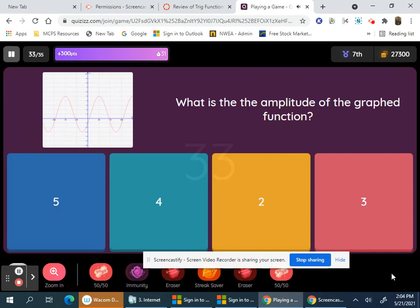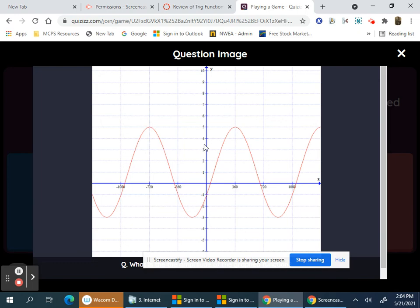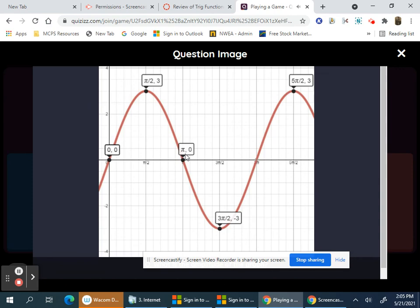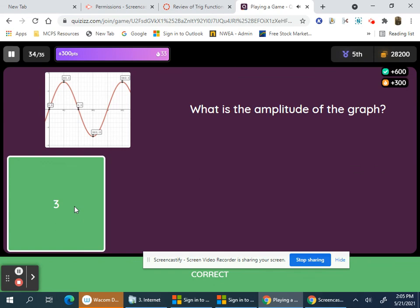What's the amplitude of the graph function? From negative 3 to 5 is 8. Or you find the average of 5 plus negative 3 is 2, divided by 2 is 1. The center line would be at 1, and the amplitude would be to go 1 to 5, which would be 4. And the amplitude here, you're going from 0 to 3 on the y, it would be 3.